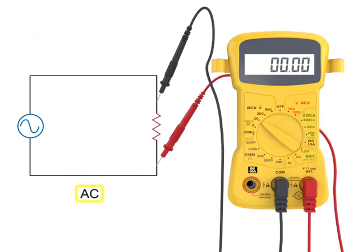Therefore, an AC voltmeter connected across the resistor in the AC circuit would read 10 volts.